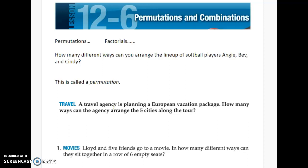How many different ways can you arrange the lineup of softball players, Angie, Bev, and Cindy? For simplicity's sake, let's call them A, B, and C. Funny how that worked out, huh? All right, so how many different ways can I arrange them? Let's see,